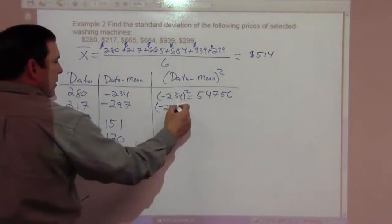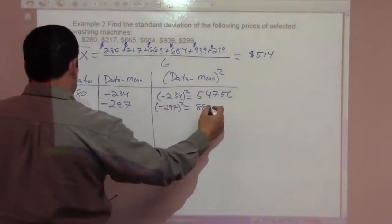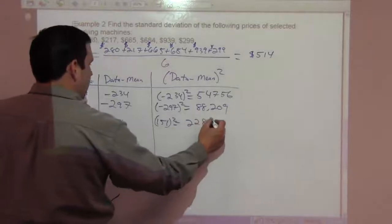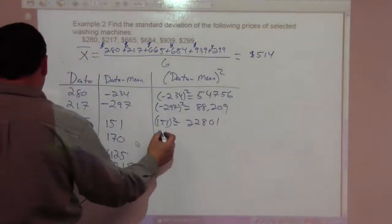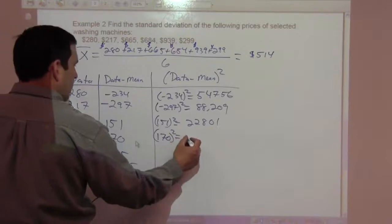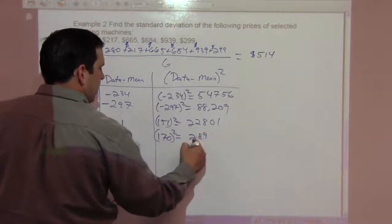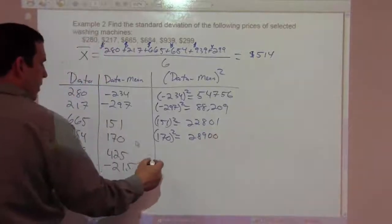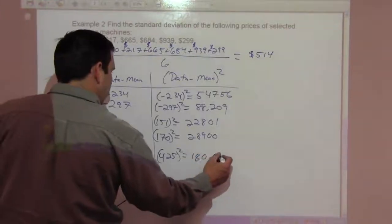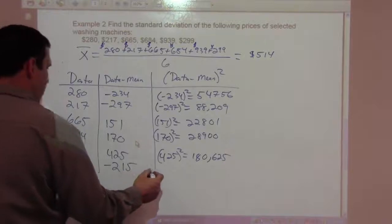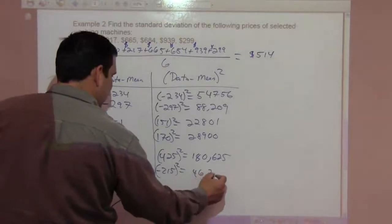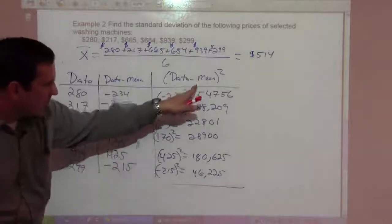151 squared is 22,801. 170 squared is 28,900. 425 squared is 180,625. And finally, negative 215 squared is 46,225. So those are all the data minus means squared.